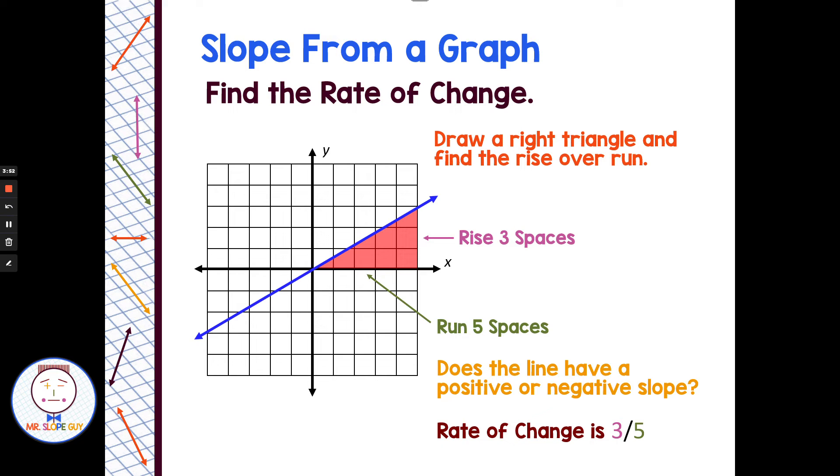3 in rise, 5 in run, rise over run. So if you have a graph, you don't necessarily need to use the slope formula. Just draw a right triangle and count the rise and run.